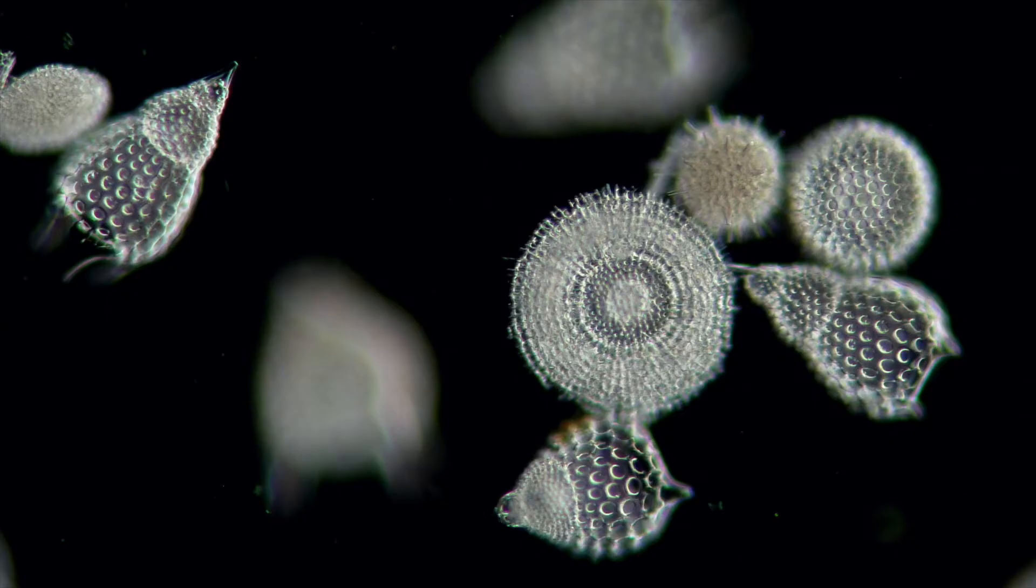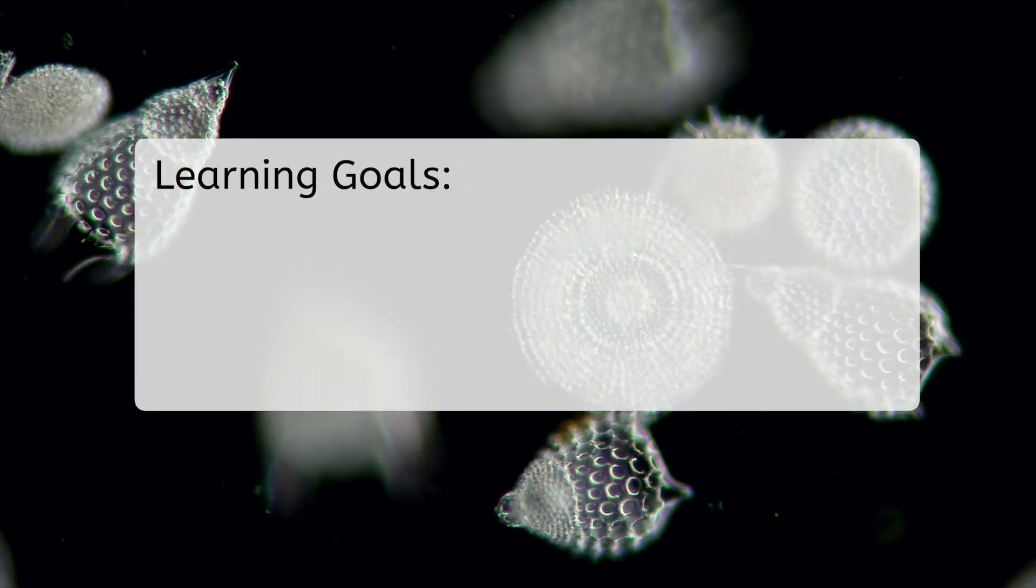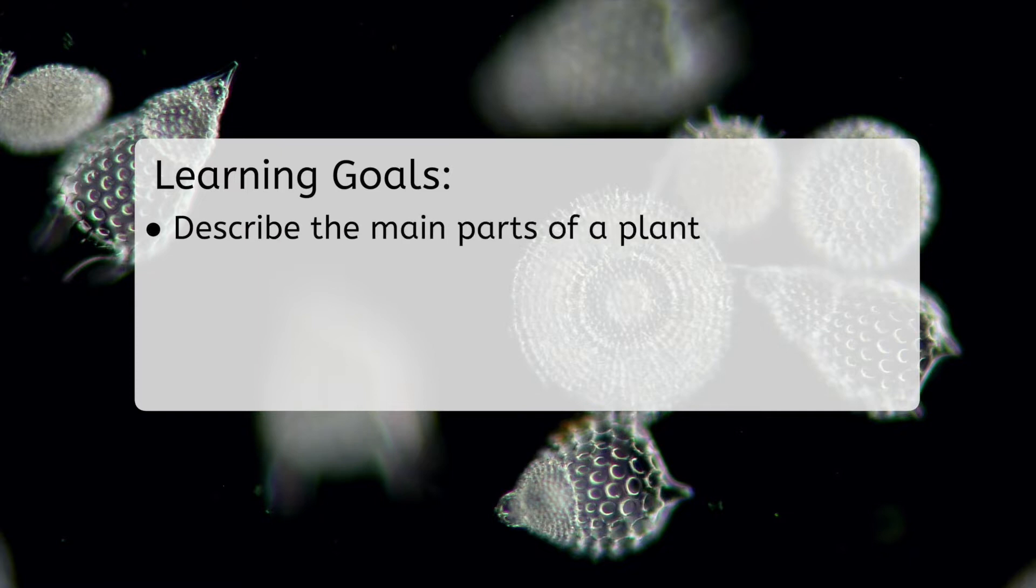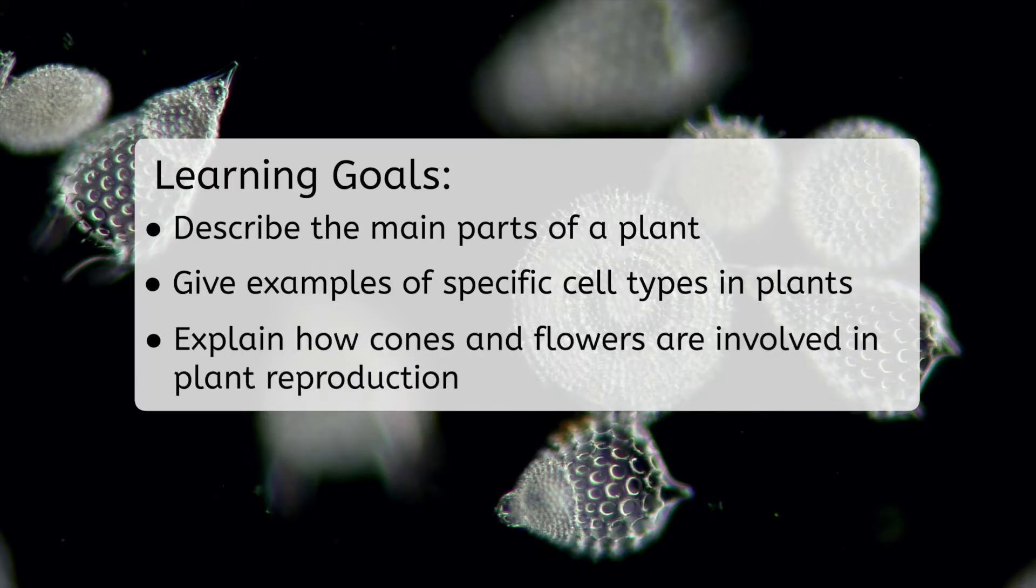Before we get started with today's lesson, let's look at our goals. By the end, you'll be able to describe the main parts of a plant, give examples of specific cell types in plants, and explain how cones and flowers are involved in plant reproduction.